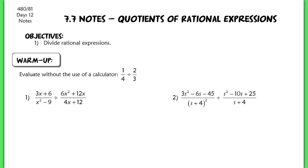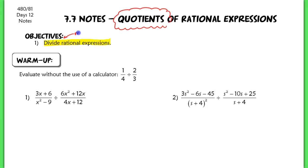This lesson is for section 7.7. Today we're going to be working with quotients of rational expressions. A quotient means that you're trying to divide rational expressions — that's our main objective. However, really what this should say is multiply rational expressions. It's really a continuation of what we've been working with, with some more difficult problems in it.